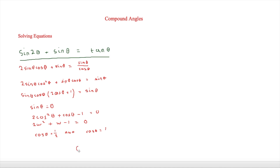Now we work out all the values of θ, working in radians. From sinθ = 0: θ = 0 and θ = π. From cosθ = 1/2: θ = π/3, and using 2π − π/3 we get θ = 5π/3. From cosθ = 1: θ = 0 (already listed) and θ = 2π. So our answers are θ = 0, π/3, π, 5π/3, and 2π.